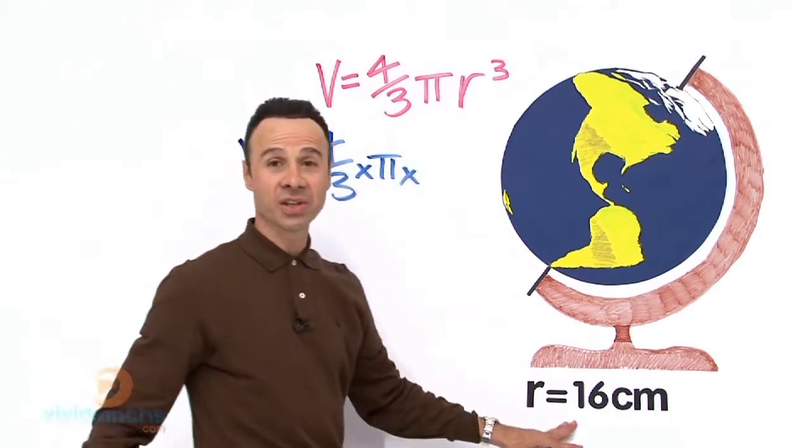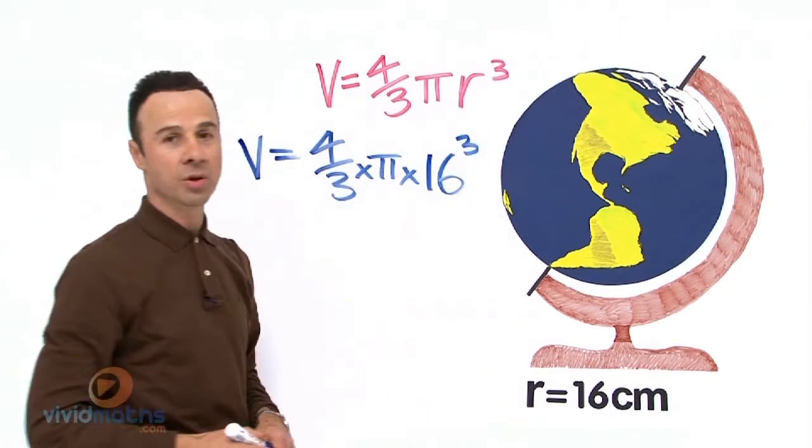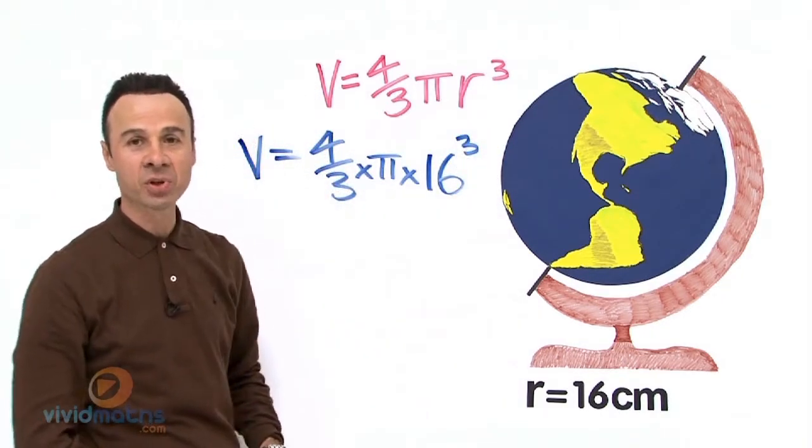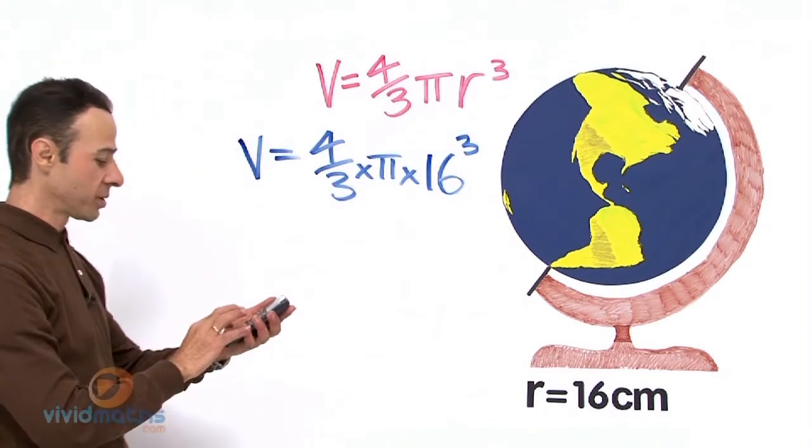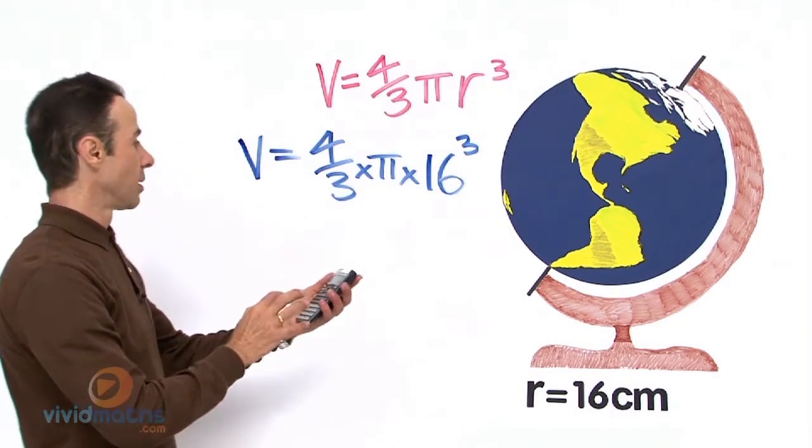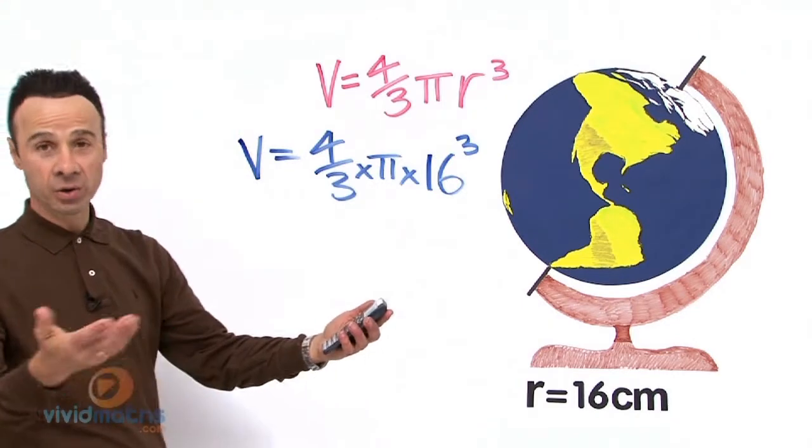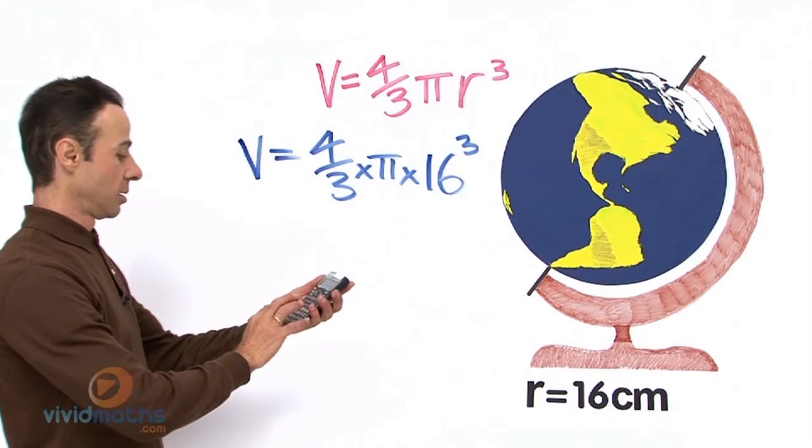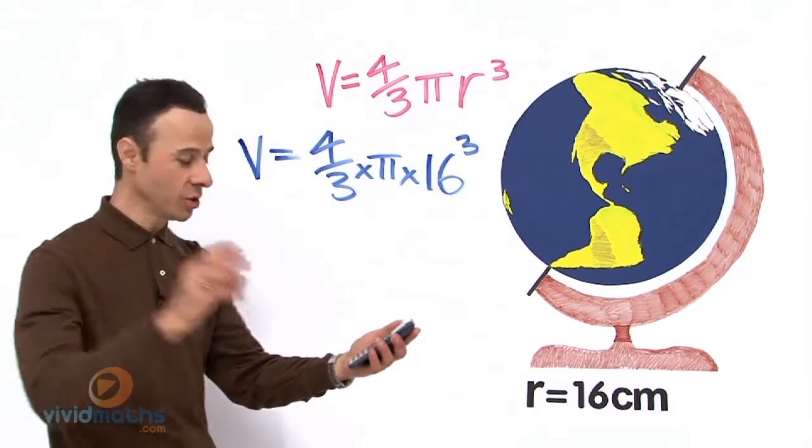There's our radius, 16 centimeters, and that's to the power of 3 as I said earlier. So it's rather simple and straightforward putting it into our calculator. We're going to put 4 divided by 3, times π on your calculator, times 16 cubed. Make sure you press to the power of 3, not to the power of 2—it is cubed.